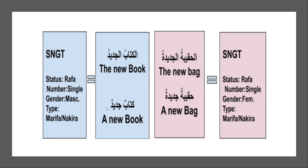And this is the masculine example. Al-Kitaabul Jadidu — the new book. Status is rafa — the u sound — and both are singular. Al-Kitaabul Jadidu — no sign for femininity, so it is masculine; both are masculine. And with al-, both are marifa. Here, because al- is not there — Kitabun Jadidun — un, un — rafa, singular. No sign of femininity, so masculine, and with tanwin — nakira. These are a few examples to apply the rules we just learned.